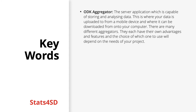Before we move further, I would like to briefly explain some of the key terminology you'll come across during this set of tutorial videos. Starting with: what is an ODK aggregator? An ODK aggregator is the server application capable of storing and analyzing data. This is the server where you'll be able to upload your data to from a mobile device, as well as where you'll be able to download your collected data from to store onto your personal computer for future analysis. It forms a key part of the whole ODK system, connecting to both your computer and your mobile device. There are many different aggregators to choose from, including Honor, Kobo, and ODK Aggregate.